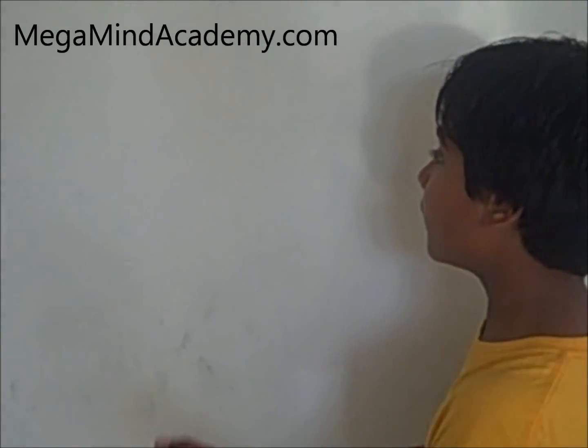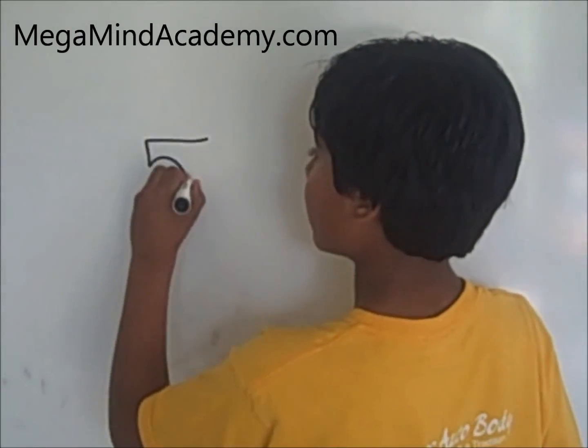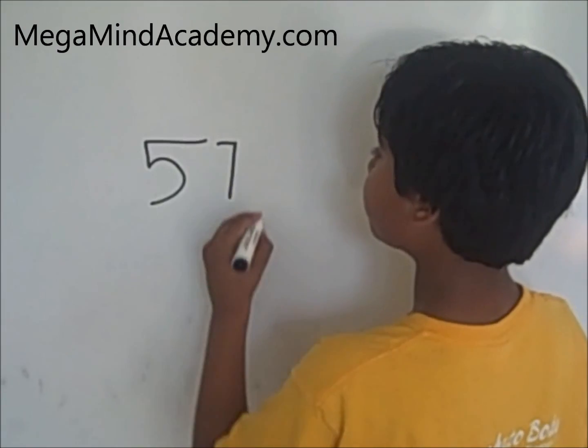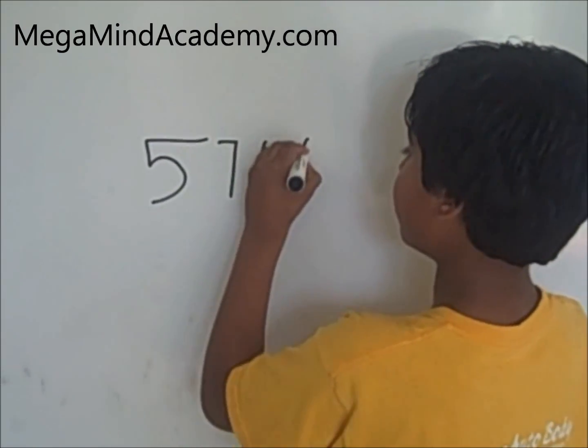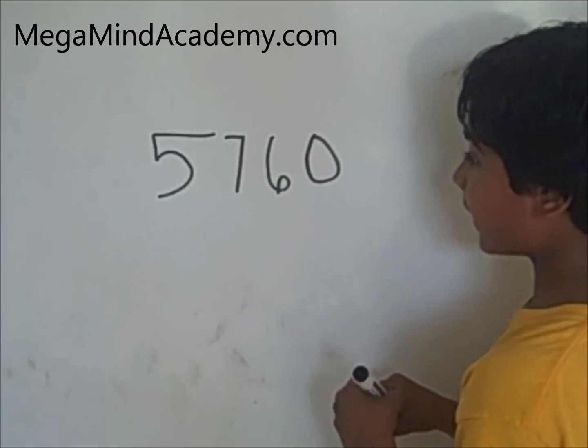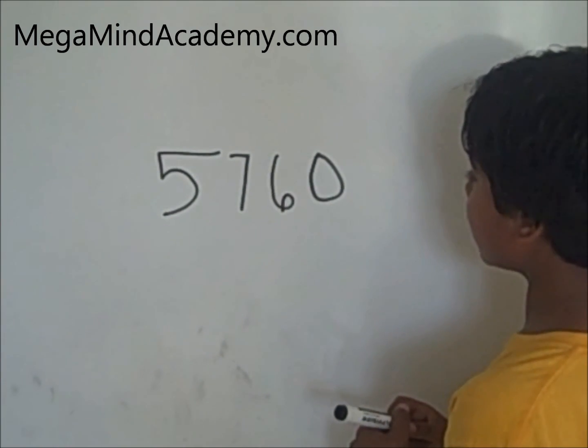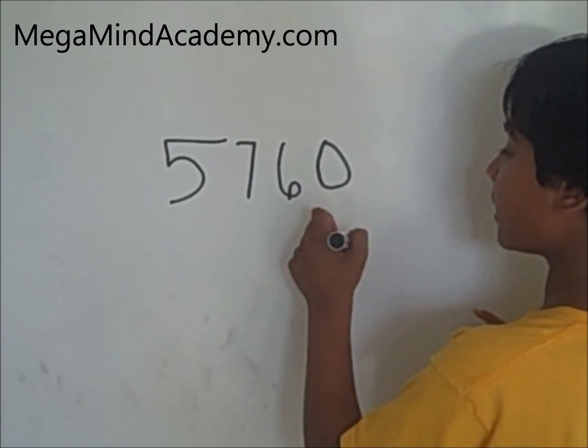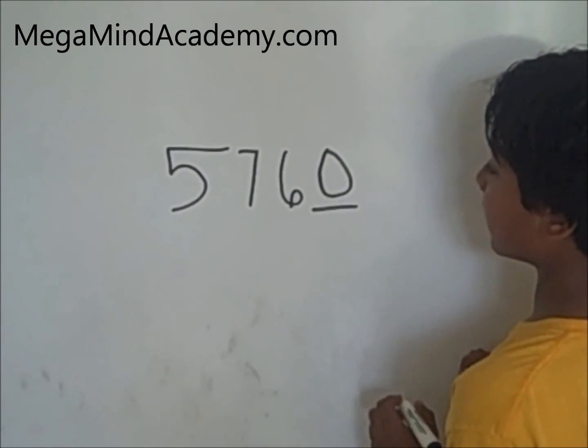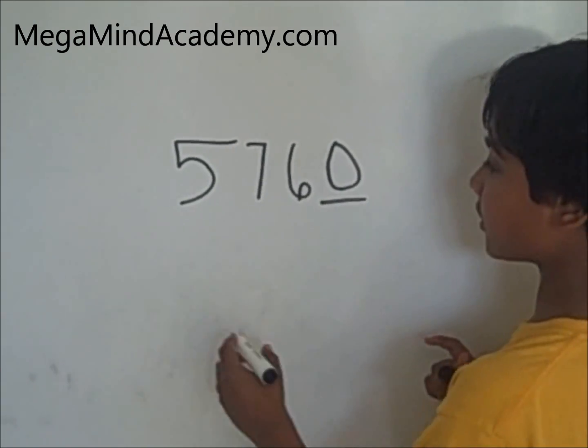Let's see if 5760 is divisible by 10. 5760 is divisible by 10 because the last digit is ending with 0. Let's check.